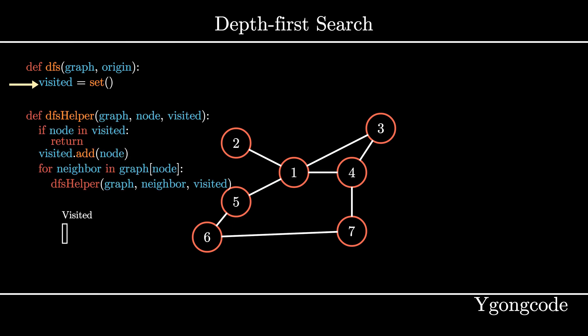The idea of depth first search is that we want to search as far as possible along a path before searching another path, also known as backtracking. The algorithm stops when all nodes have been searched.